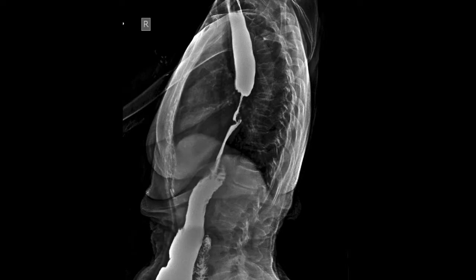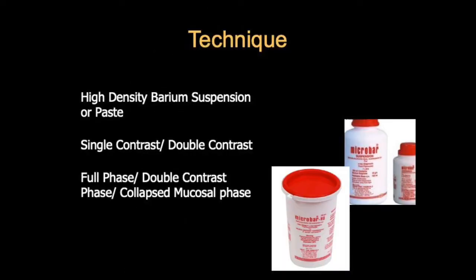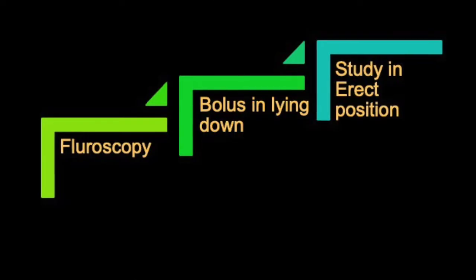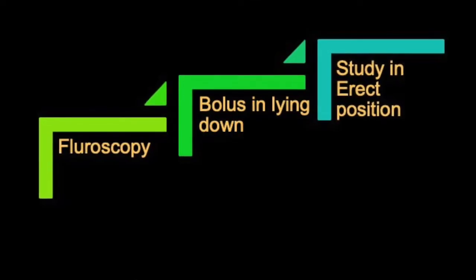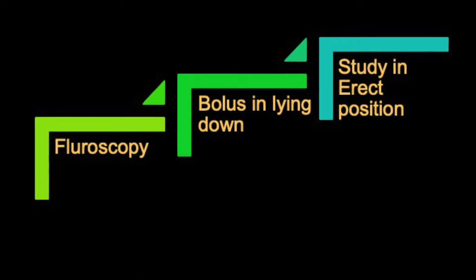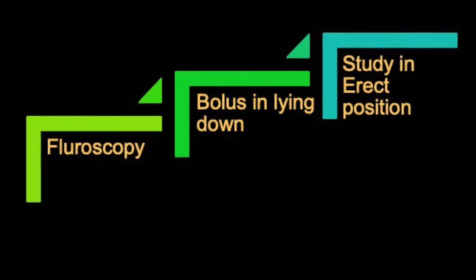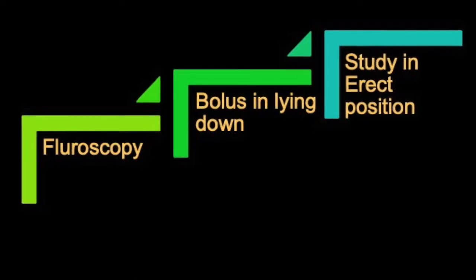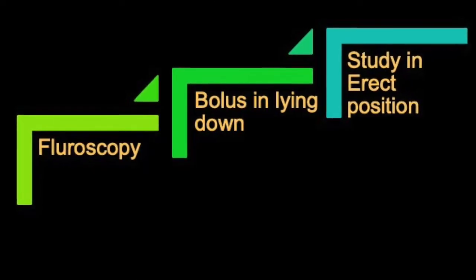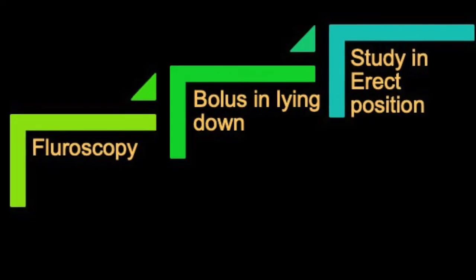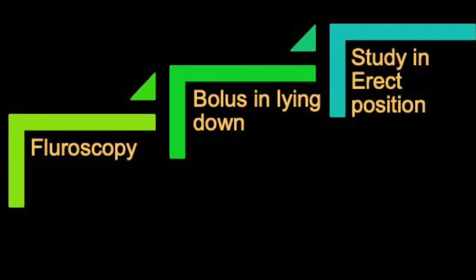When the patient comes, it's usually an overnight fast. There are two or three simple steps before we start giving large amounts of bolus. First, make the patient lie down and conduct a quick fluoroscopic check of the chest to look for signs of aspiration pneumonitis or any radiopaque lesions. We then give a thick bolus in the lying-down position and look for esophageal peristalsis to assess motility disorders. Once the bolus is taken, make the patient erect again and start taking images.